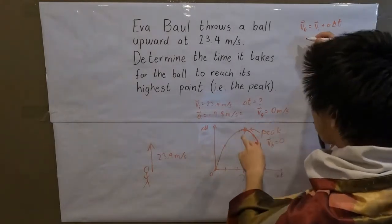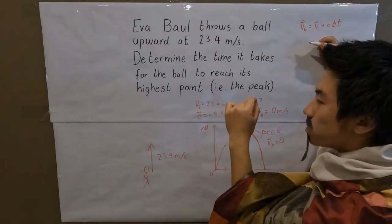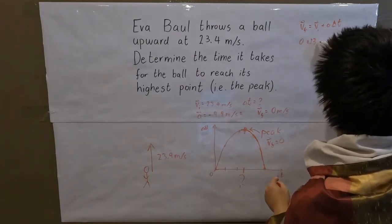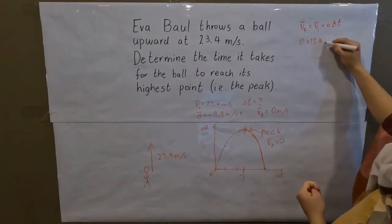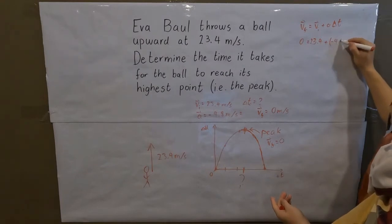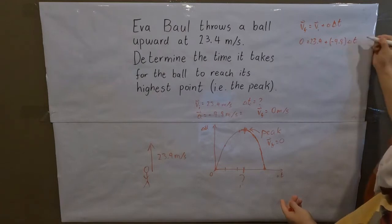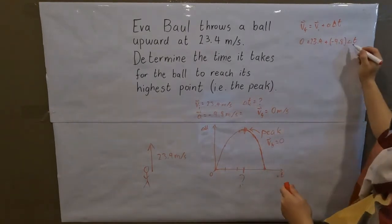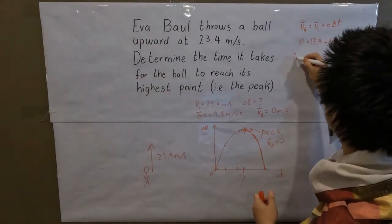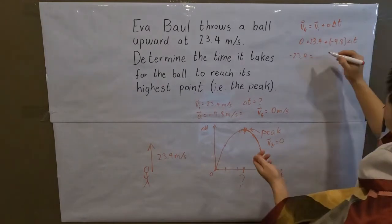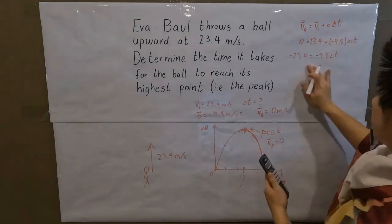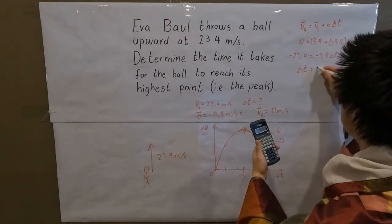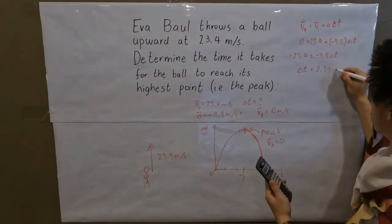We know vf is zero because at the peak the ball stops. So: 0 = 23.4 + (−9.8)(Δt). Moving 23.4 to the other side: −23.4 = −9.8 × Δt. Using the calculator to isolate Δt, we find that Δt = 2.39 seconds.